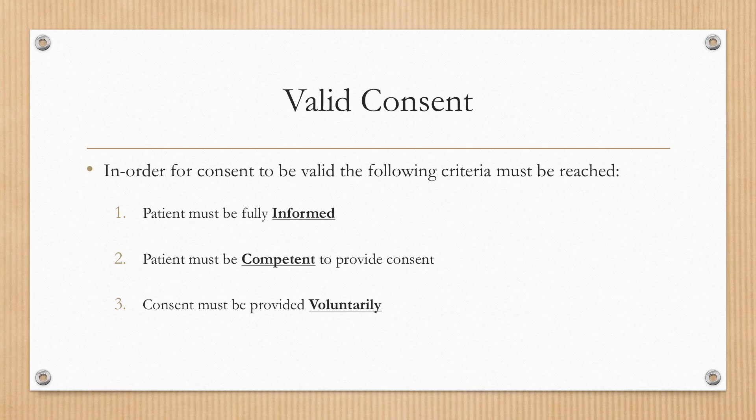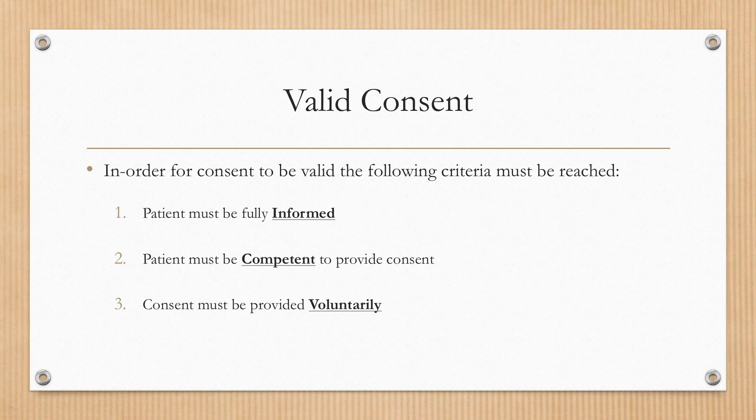There are three criteria that must be fulfilled in order for consent to be valid. Firstly, a patient must be fully informed about the treatment, benefits, and the risks. They must also be competent to provide consent. And consent itself must be provided voluntarily, without coercion.